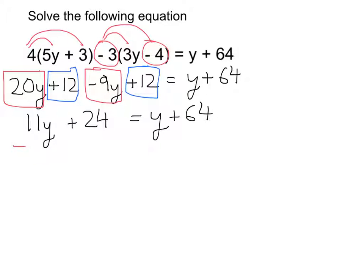So the first thing I'm going to do is take away a y, one y from both sides. OK, so I'm going to get 10y plus 24 is equal to 64. So now I've got my one letter term on the left-hand side.